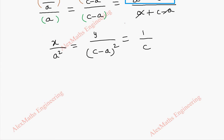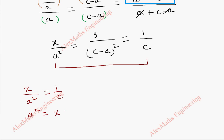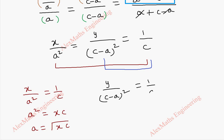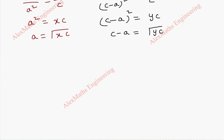Because we have to find a and b, and here b = c-a, we need to substitute back into the equation. By equating the terms, x/a² = 1/c, so by cross multiplication, a² = xc and a = √(xc). In the same way, equating y/(c-a)² = 1/c, we get (c-a)² = yc and c-a = √(yc).